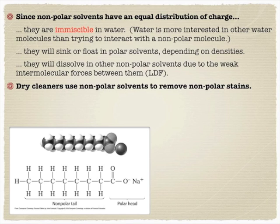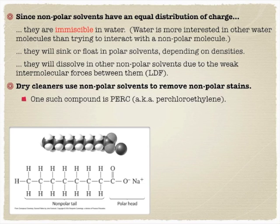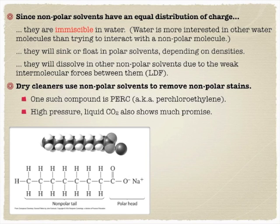Dry cleaners actually use non-polar solvents to help remove non-polar stains. If you try to wash out oil or grease with water, it might not come out because you're dealing with polar water and non-polar substances. That's why dry cleaners use things like PERC — perchloroethylene. Some dry cleaners are starting to use liquid carbon dioxide, which would have to be above five atmospheres of pressure, but it's a nice alternative — if it leaks, you're just releasing carbon dioxide rather than more dangerous chemicals.